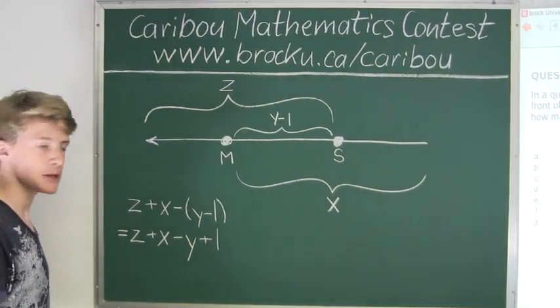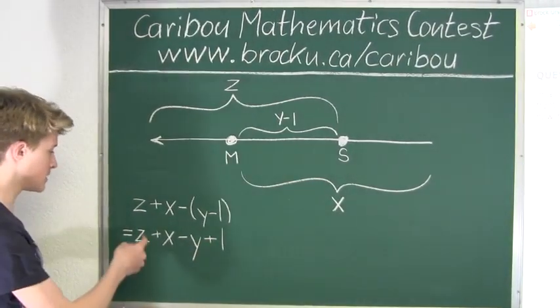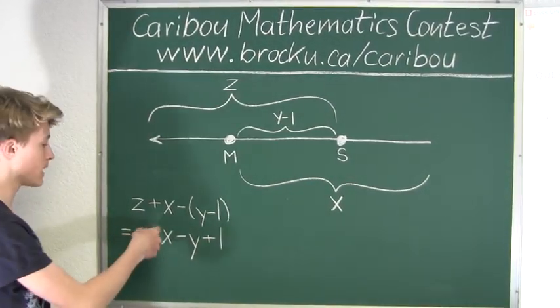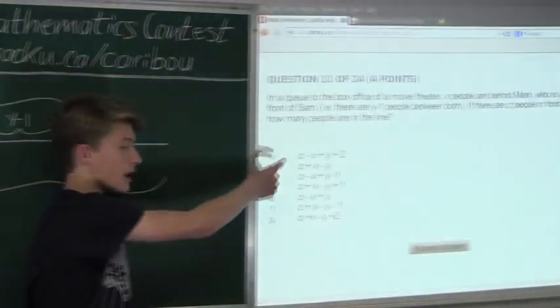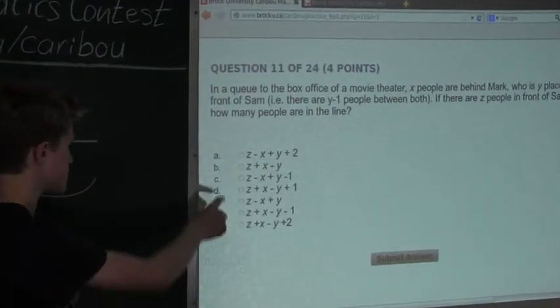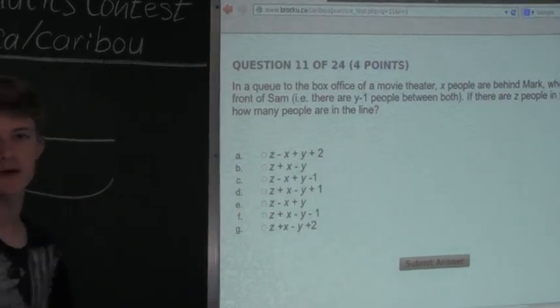So we know that the amount of people in the entire line is Z plus X minus Y plus 1. So as we can see out of the options, the answer is option D, Z plus X minus Y plus 1.